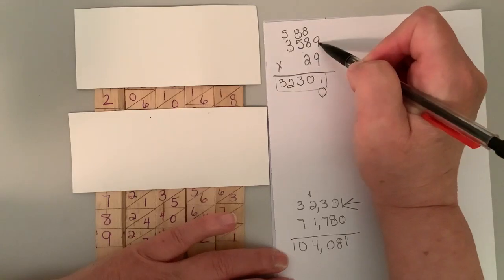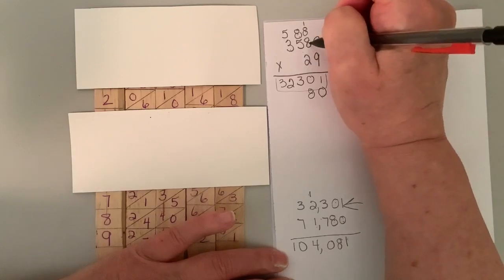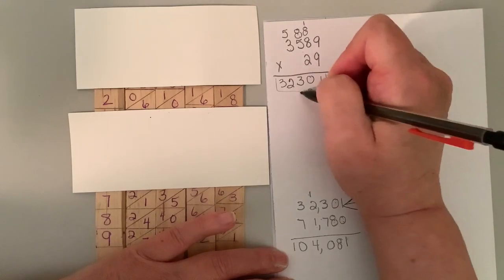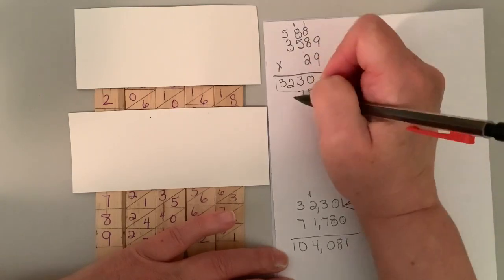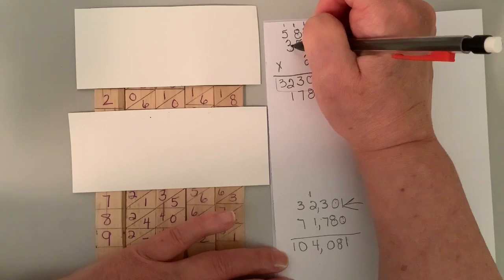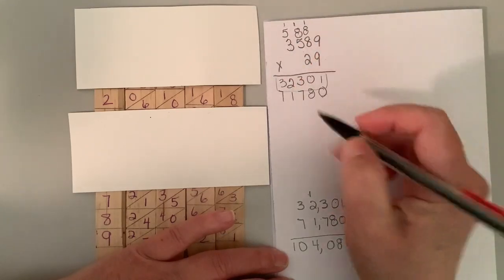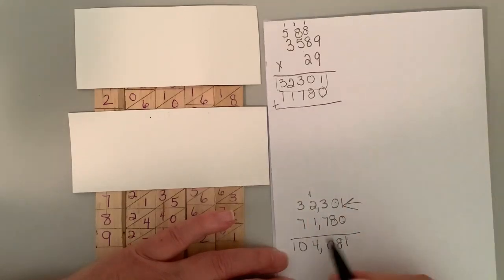And then two times nine is 18. We're going to carry the one. Two times eight is 16, plus one is 17. Two times five is 10, plus one is 11. And two times three is 7. And look what I've got here. 71,780. 71,780.